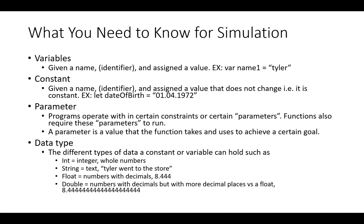There are data types for integers, which basically just hold whole numbers. There are data types for floats, which are numbers with decimals. And then a double data type is basically a number with decimals but with a lot more decimal places than a float can hold.